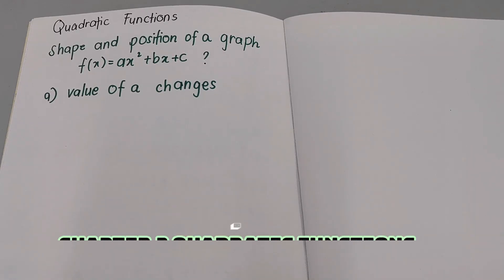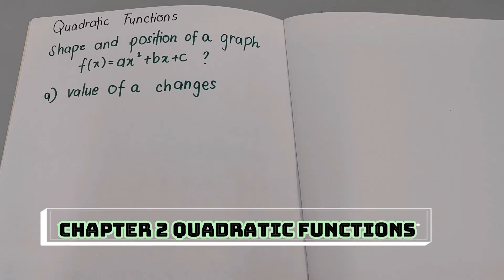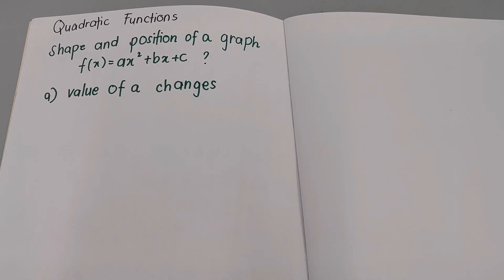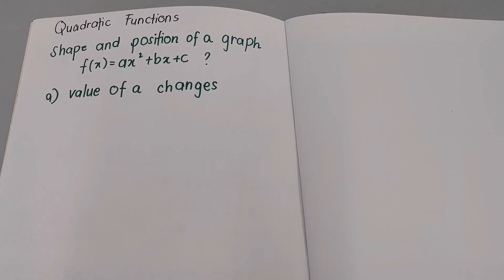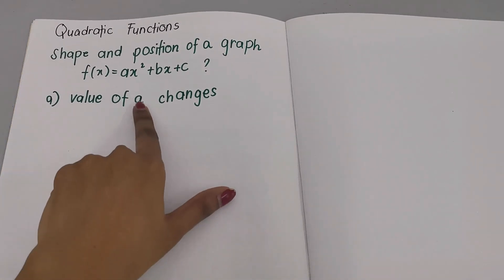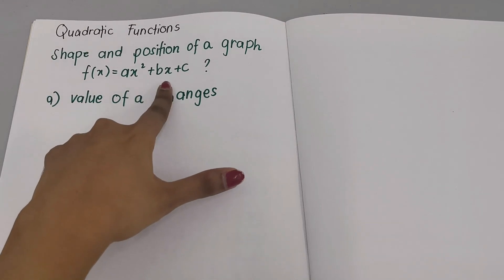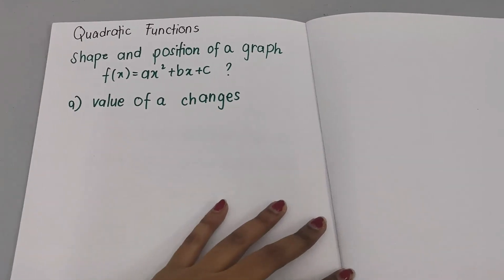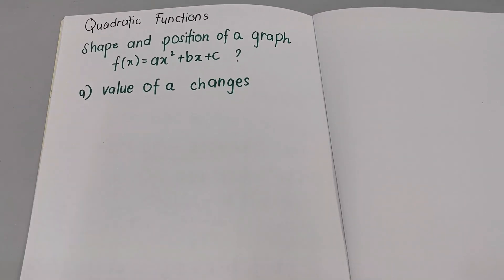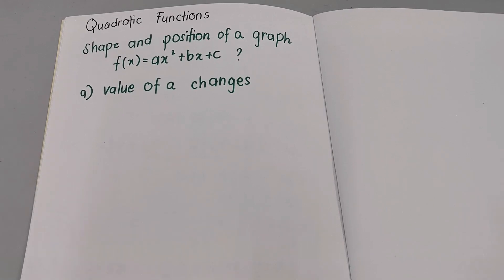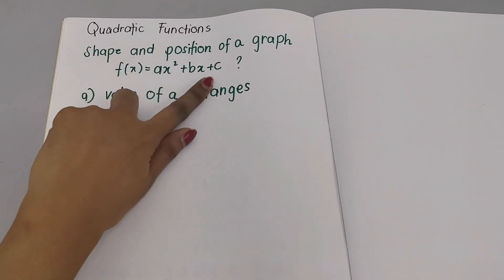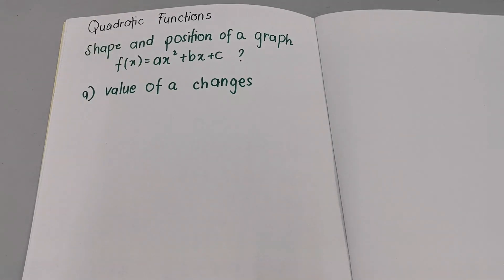Hi EJ students, I hope all of you are doing well. In this topic, I'm going to guide you on quadratic functions, still chapter 2, form 4. This time we're going to analyse the shape and position of a graph — what happens when the value of A changes, what happens when the value of B changes, and the value of C. So usually when we have the equation AX squared plus BX plus C, we have to draw graphs, and the shape or position of the graph can change according to the value.